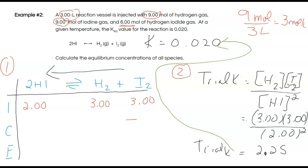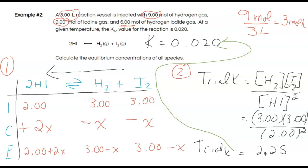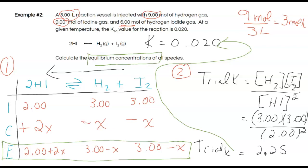So in the change row, that gives: −X and −X for H₂ and I₂ (products), and +2X for HI (reactant). The equilibrium concentration expressions are therefore: HI = 2.00 + 2X, H₂ = 3.00 − X, and I₂ = 3.00 − X. Now I'm in a position to do equilibrium law calculations and solve for the unknown X to get equilibrium concentrations of all species — solving for X once will apply across all expressions.